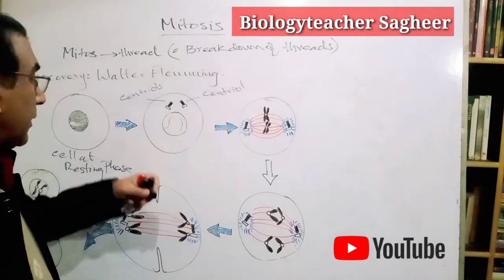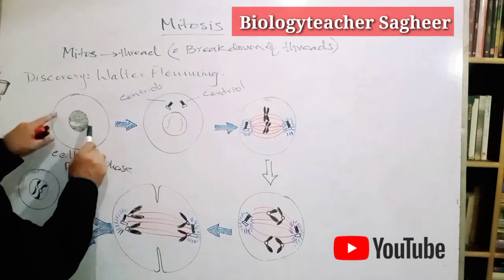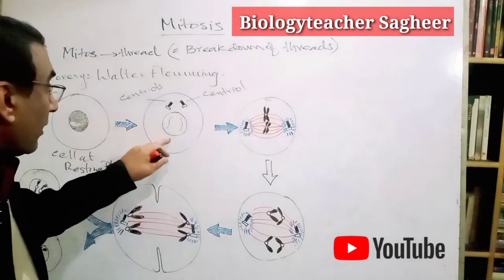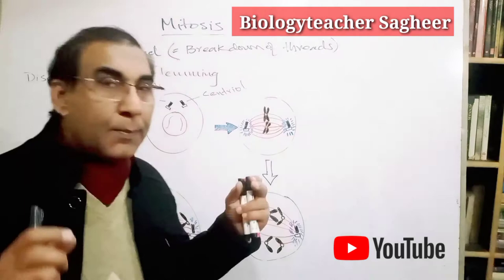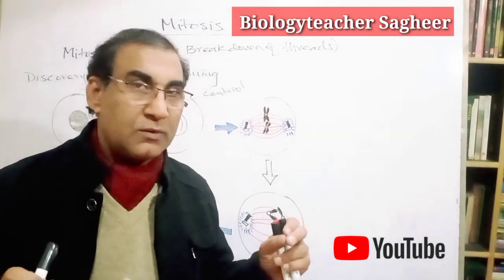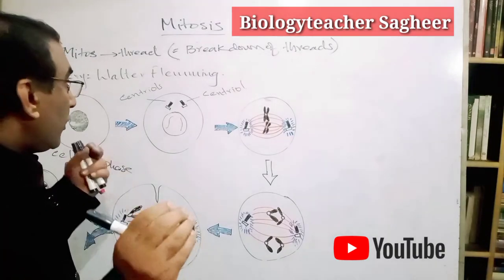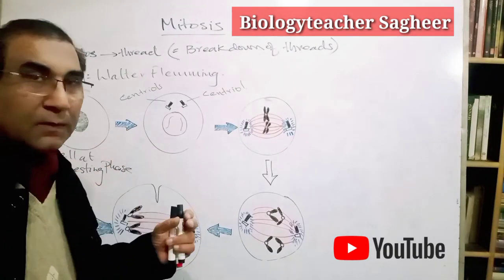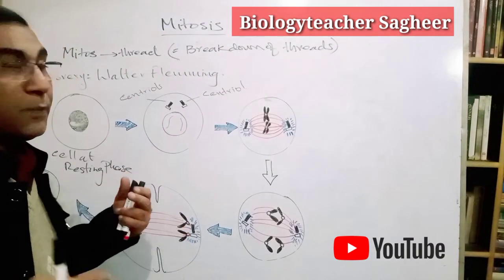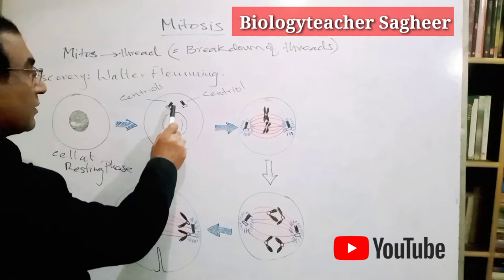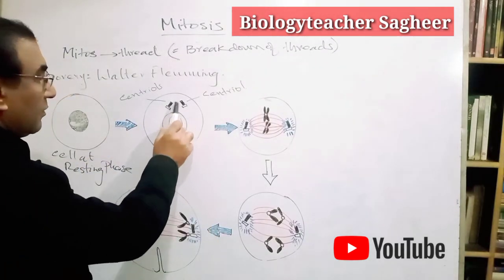The chromosomes appear as thread-like structures. The first thing which announces cell reproduction is the appearance of the pair of centrioles.